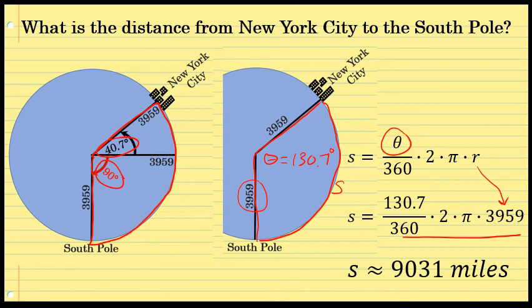Again, this is an approximation — it's fairly close, but it's an approximation. The distance from New York City to the South Pole is about 9,031 miles.